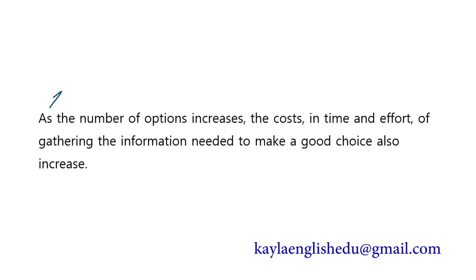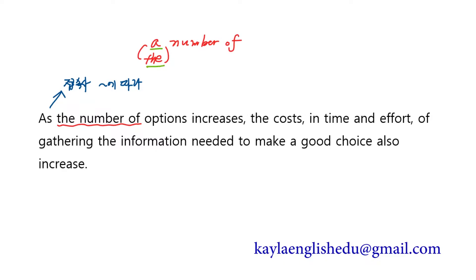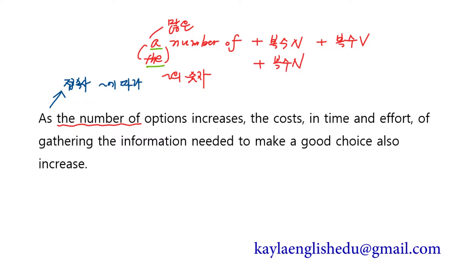이 as는 접속사 as예요 — '뭐뭐에 따라'정도의 의미입니다. a number of와 the number of 두 표현이 있는데, 달라지는 것은 관사뿐이지만 의미가 크게 달라져요. a number of 뒤에는 복수명사가 들어가고 뜻은 '많은' — a lot of와 같은 말이에요. 많은 이니까 복수동사가 들어가요. the number of는 '무엇의 숫자'라는 뜻이에요. 숫자라는 것이니 the number of 뒤에는 복수명사가 오지만 단수동사가 들어가야 해요.